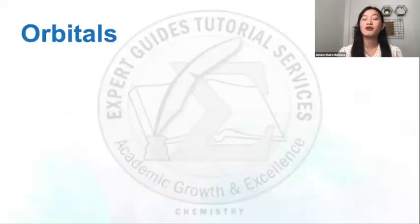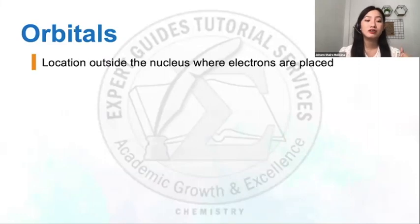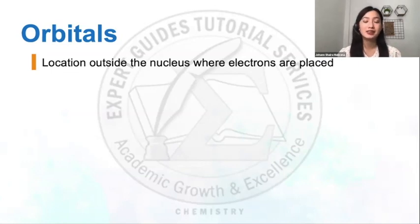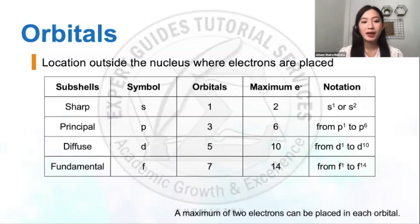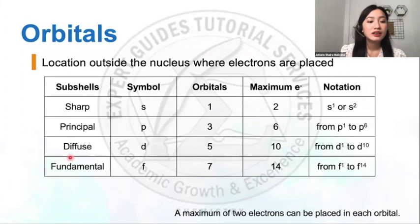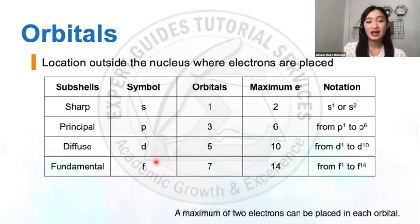But what exactly are orbitals? As previously discussed, orbitals are the location wherein electrons can be located or placed outside the nucleus. Inside an atom, there are four sub-levels or sub-shells — mainly sharp, principal, diffuse, and fundamental — which are symbolized as S, P, D, and F respectively.